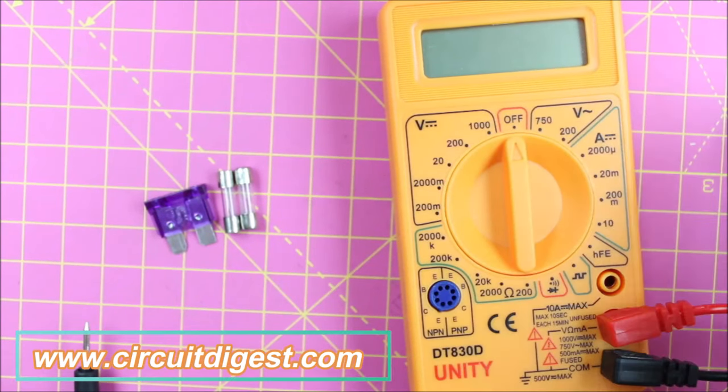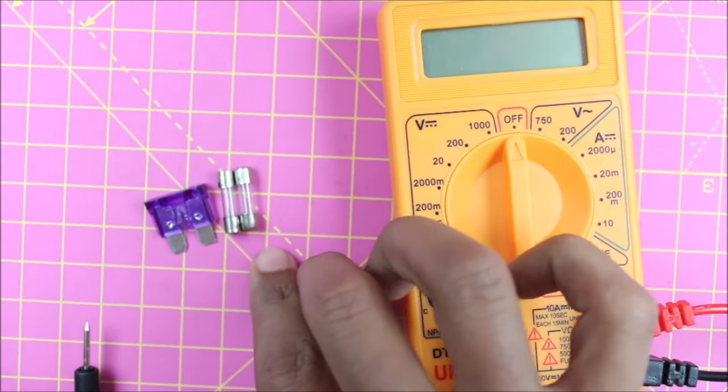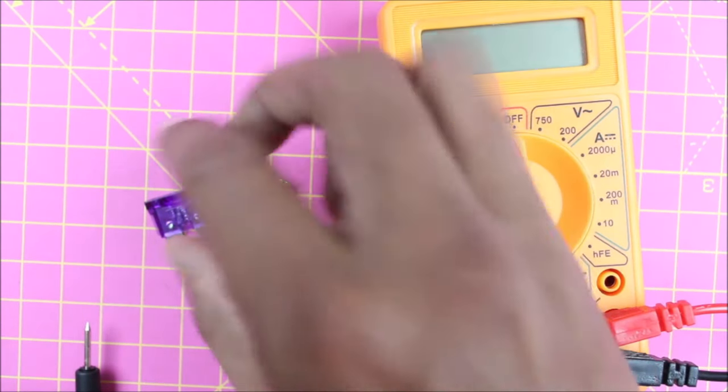Hi, welcome back to another quick tutorial of Circuit Digest. In this video we'll see how you can use a multimeter to check if your fuses are in working condition. We have two fuses here, one is the tubular fuse, another is the automotive fuse.